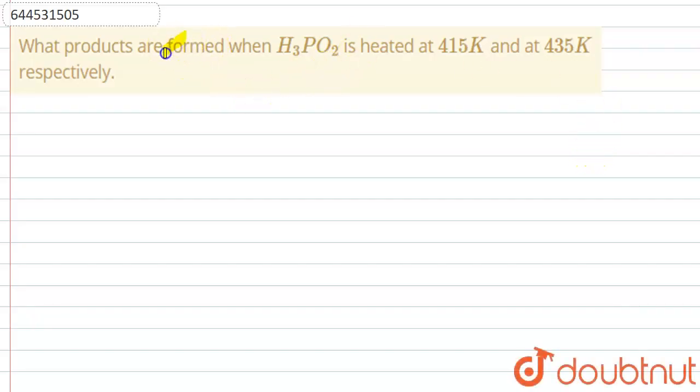What products are formed when H3PO2 is heated at 415 Kelvin and 435 Kelvin respectively? In this question, we have to give the products when H3PO2 is heated at two different temperatures.